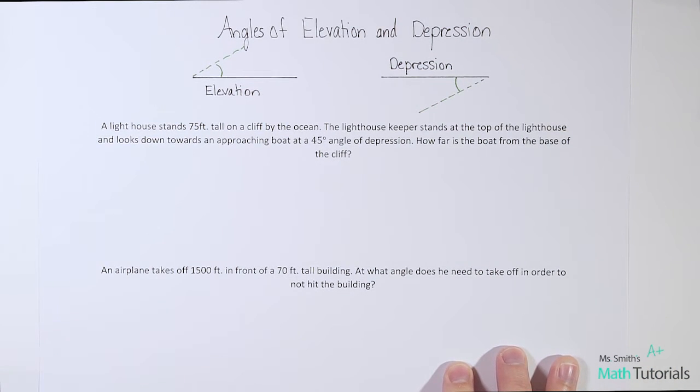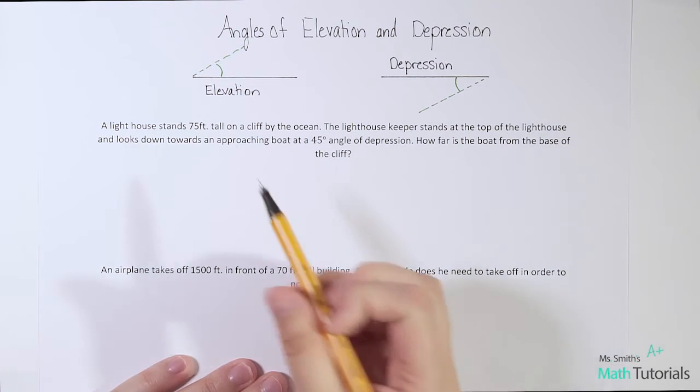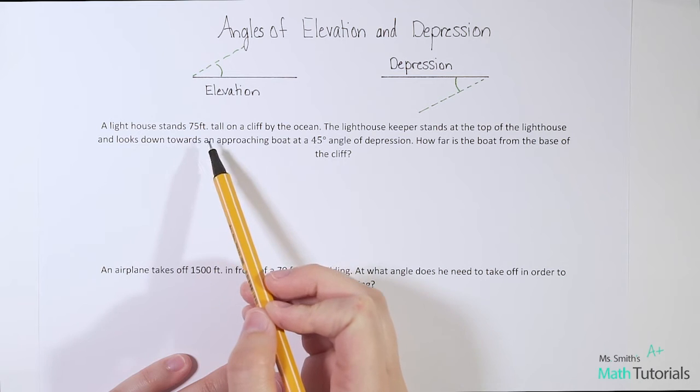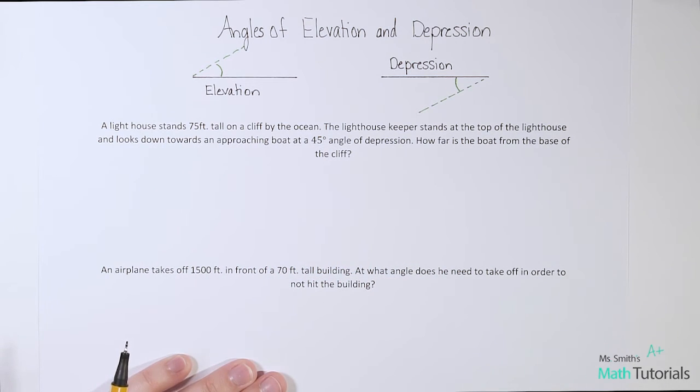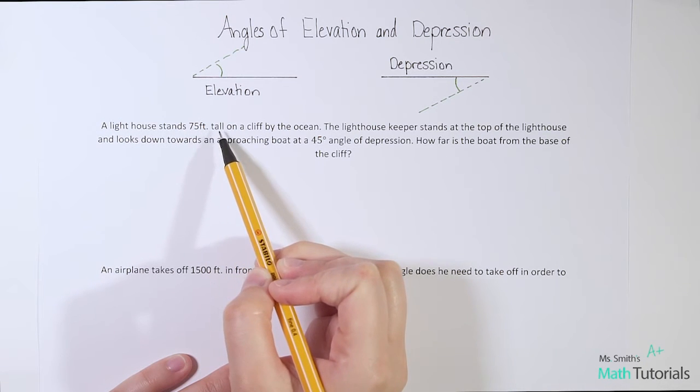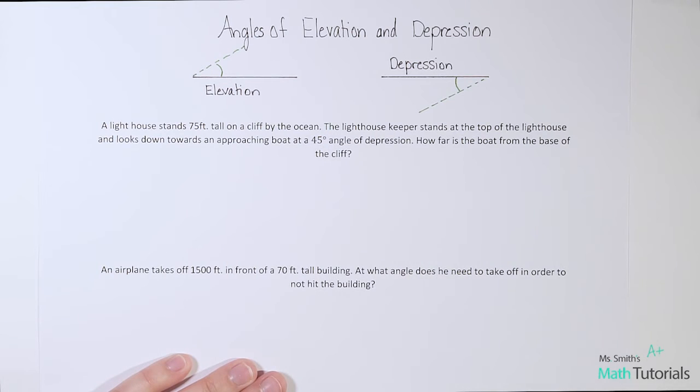Let's look at some examples. A lighthouse stands 75 feet tall on a cliff by the ocean. The lighthouse keeper stands at the top of the lighthouse and looks down towards an approaching boat at a 45 degree angle of depression. How far is the boat from the base of the cliff? Now that feels like a lot of information all at once, so let's break it down sentence by sentence and draw a visual representation.